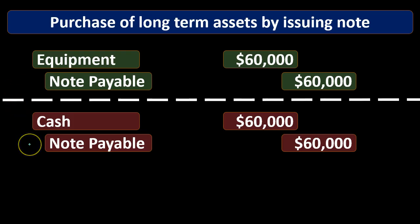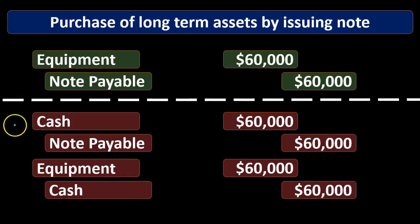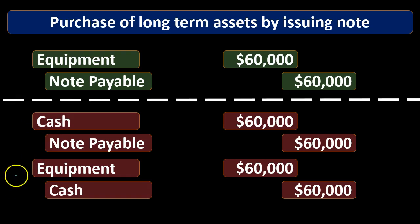If we took out a loan, we would increase the liability and debit cash, but then we would turn around and take that cash and pay for the equipment. So we would debit equipment and credit cash. This transaction would deal with cash as the medium of exchange, but we just cut out the middleman — we cut out the cash. It went directly to this transaction. This is why they're related in some format to the cash flow statement: it's a transaction that would have had cash as an exchange, but the cash was removed and we did some other type of exchange.